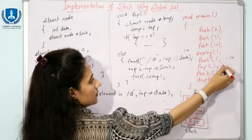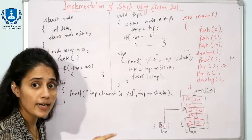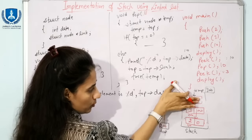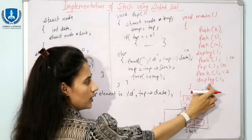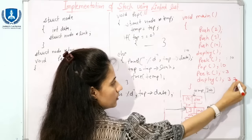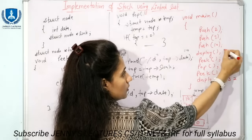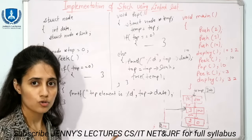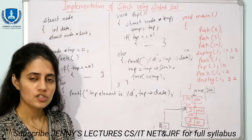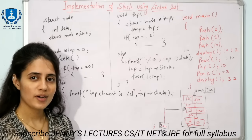The output of pop would be 10. After popping, calling peek would return 3, since that is now the topmost element. Calling display would show 3 and 2. This is how we implement stack using linked list. In the next video, we will discuss more applications of stack using code, as well as the queue data structure.